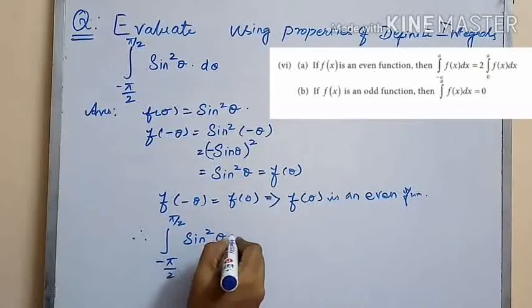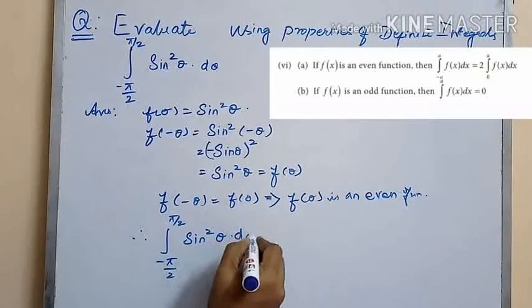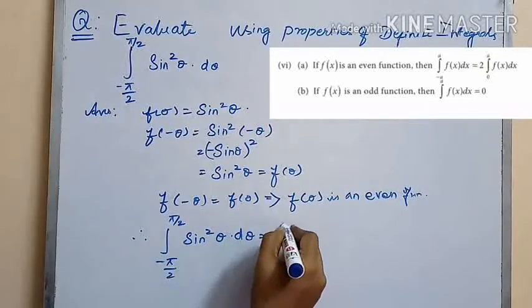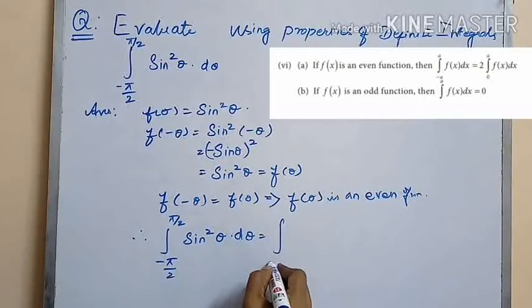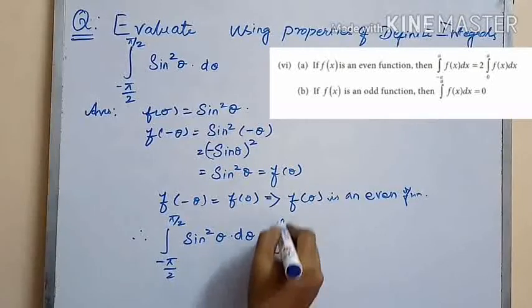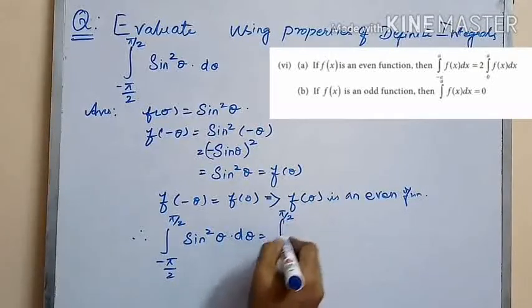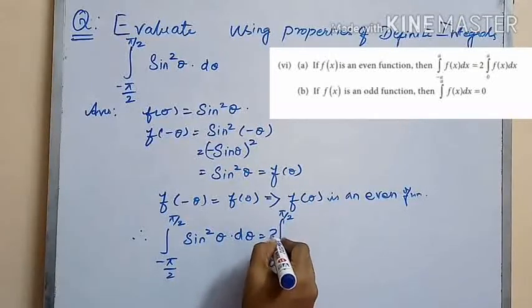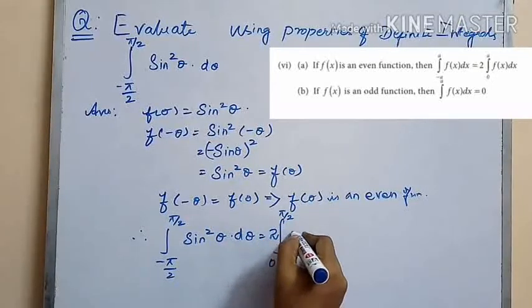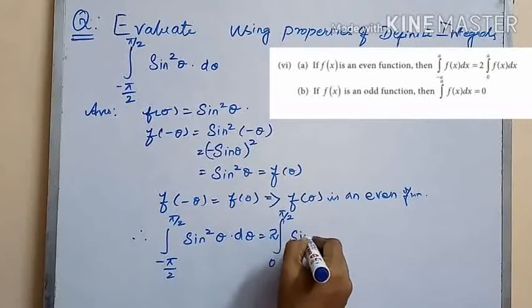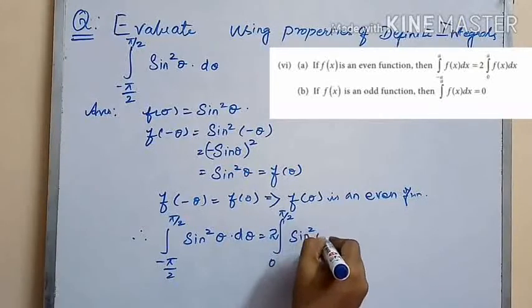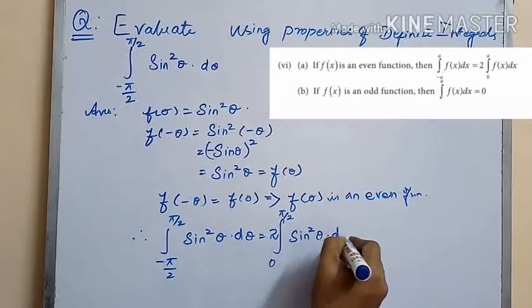So we can write the integral from minus π/2 to π/2 of sin²(θ) dθ as 2 times the integral from 0 to π/2 of sin²(θ) dθ.